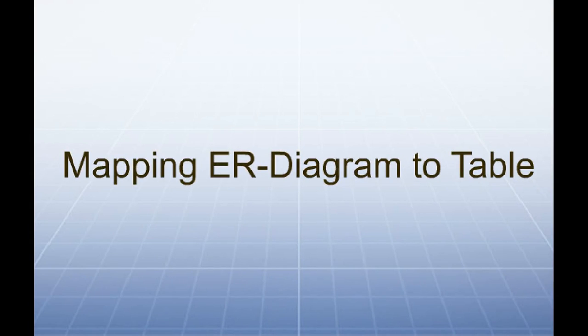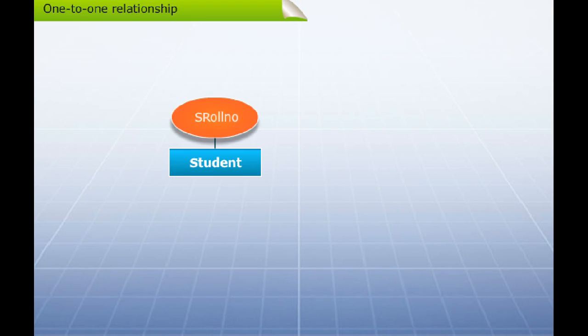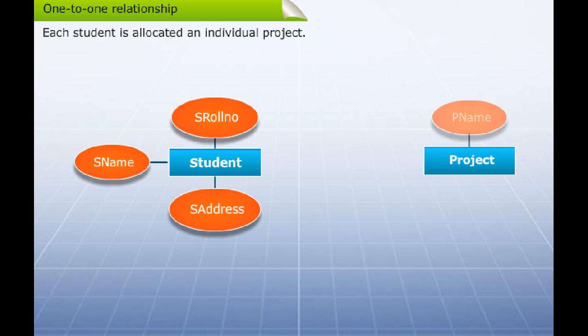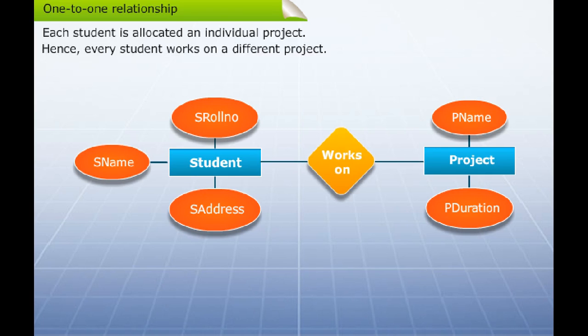Mapping ER Diagram to Table. Students in a class work on various projects allocated to them. Each student is allocated an individual project. Hence, every student works on a different project. This one-to-one relationship can be handled by merging the details of both entities in a single table.